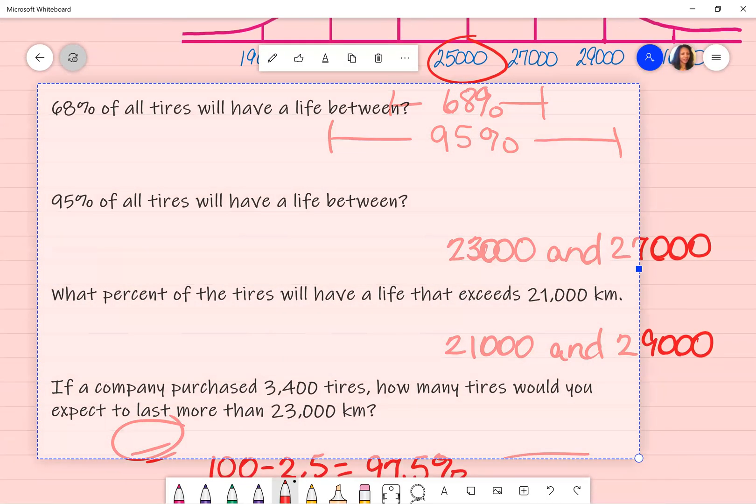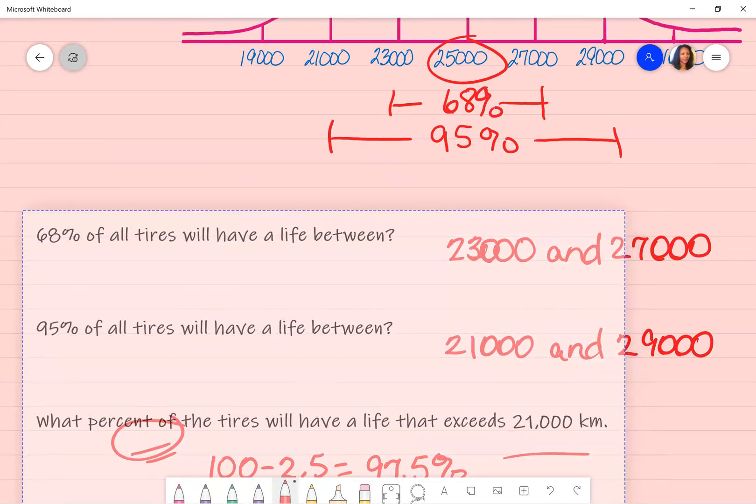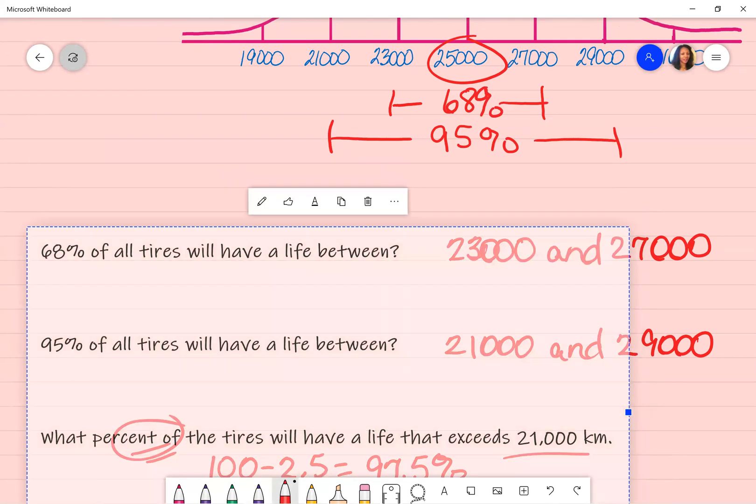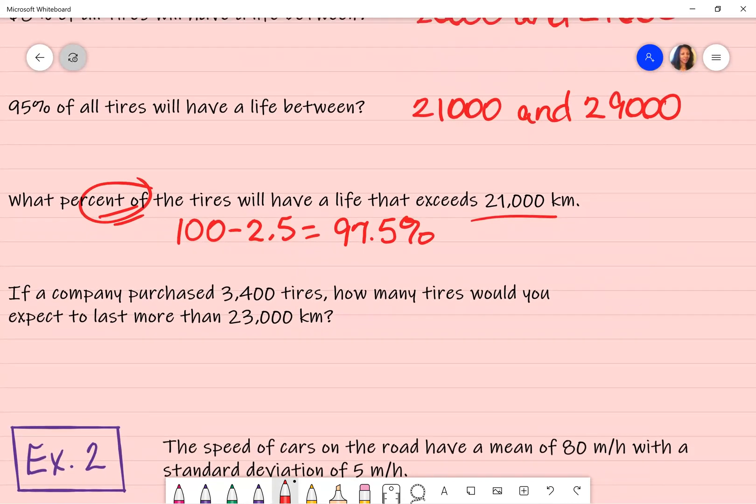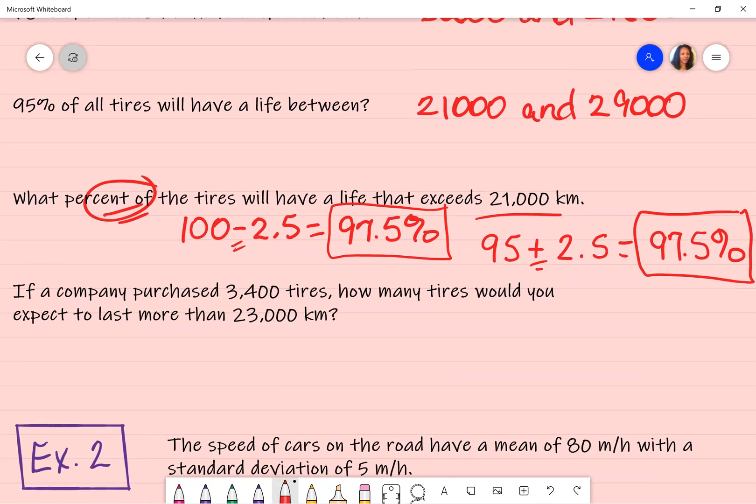Let me do the math for you. So 95% plus 2.5 is 97.5%. So it does not matter which way you do it. If you want to add, or if you want to subtract it from that 100, doesn't matter. It gives you the same answer.